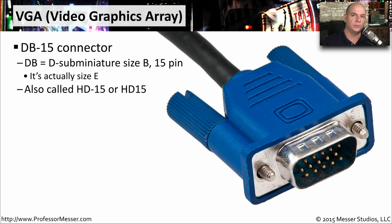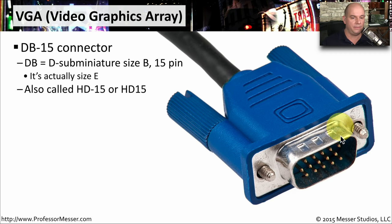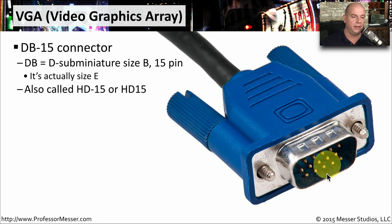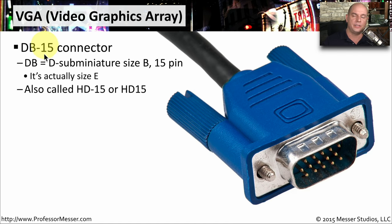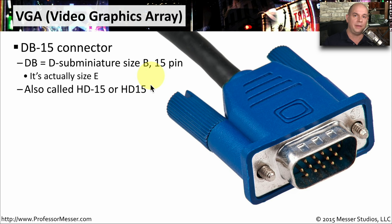Since the early days of personal computers, we've sent analog video over VGA connectors — this stands for Video Graphics Array. You may see these referred to as a DB15 connector. The DB stands for D sub-miniature size B, and the 15 stands for the 15 pins inside the connector. Technically, because the D shell is actually a size E, this would be a DE15 connector, but in the industry we call it DB15. You might also see it called HD15.